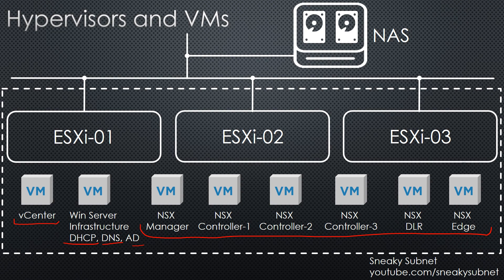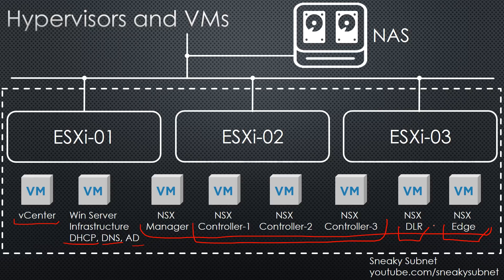You need an NSX Manager, you need an NSX Edge node itself, and you need one more NSX Edge to create an NSX DLR VM, which stands for Distributed Logical Router VM. Also on the slide you can see the NAS appliance, which obviously provides storage services for our ESXi hypervisors.